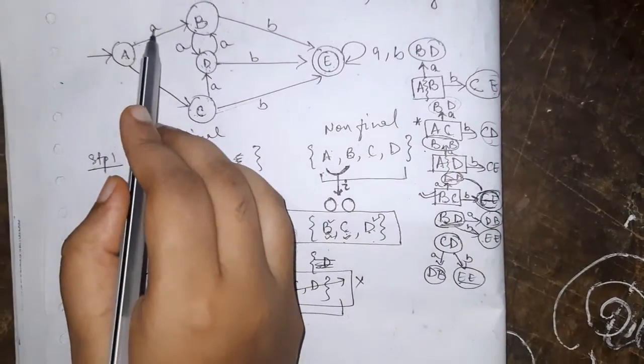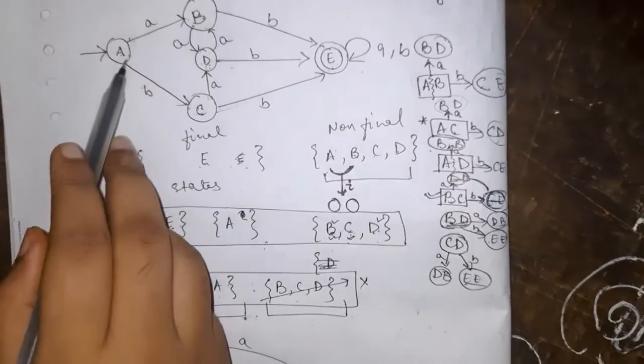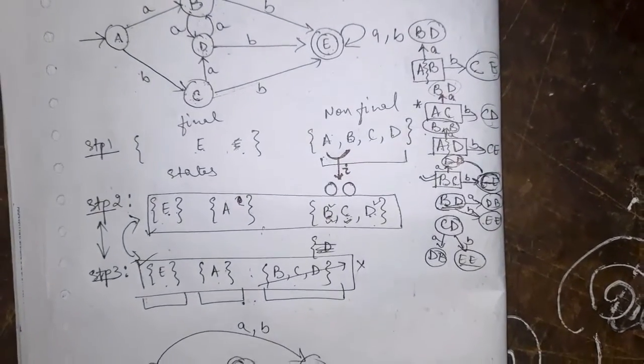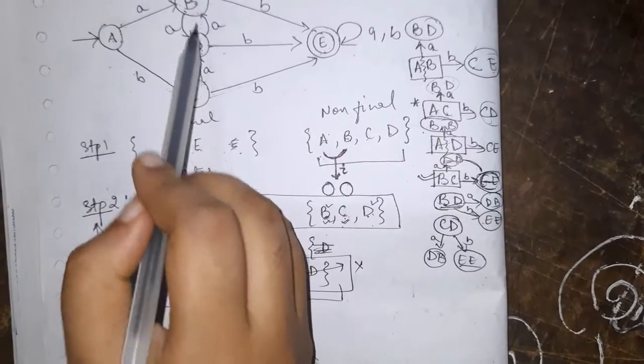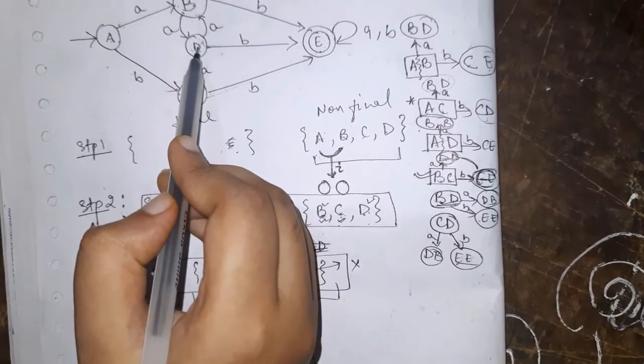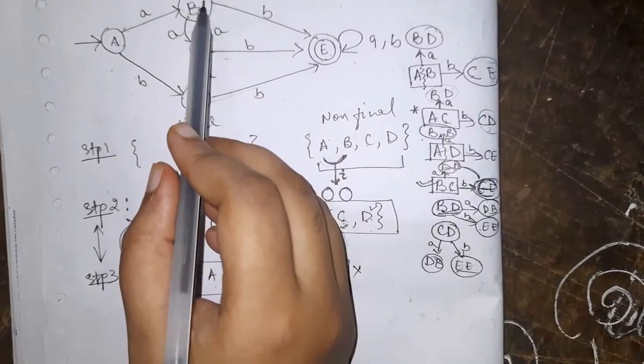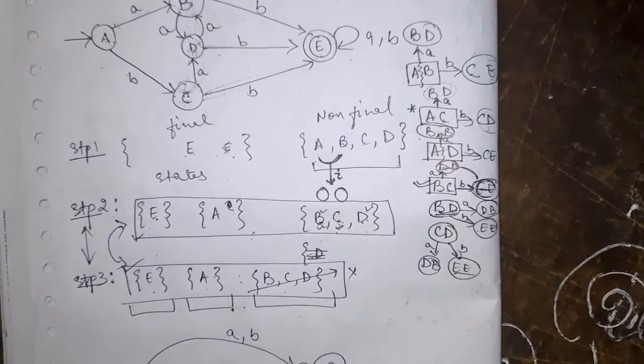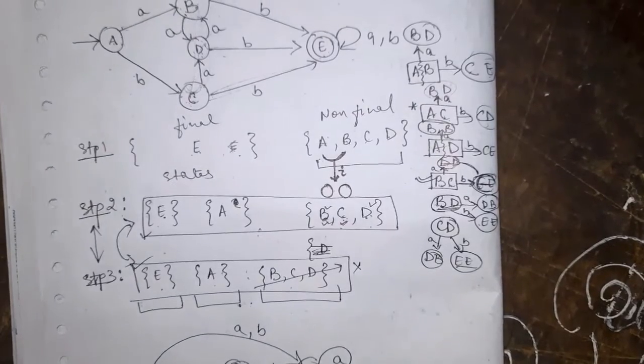Like A on giving A we go to B. Means now it will be like this to X. A on B we will get C. Means to X. Then this whole thing from B that is from X on giving A we are going to X. So it is a self loop. And from these three if we get B E we are going to E. That is like this. And then here it is self loop A, B.